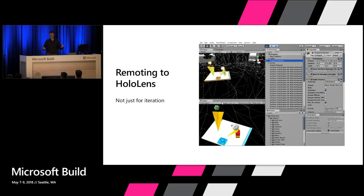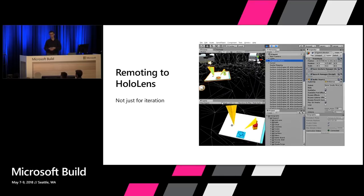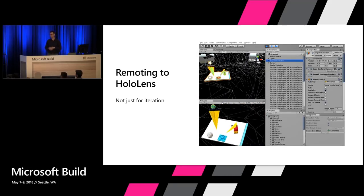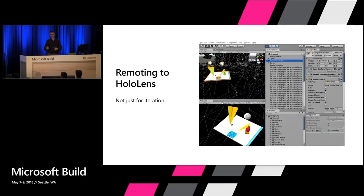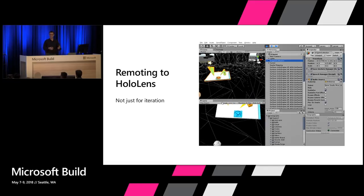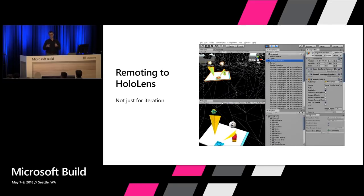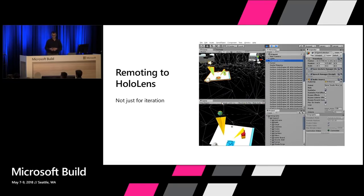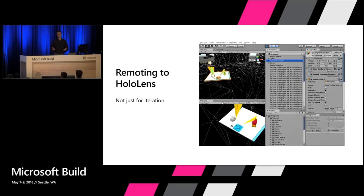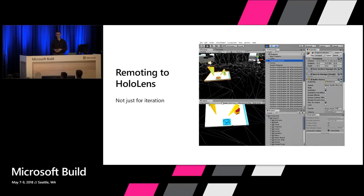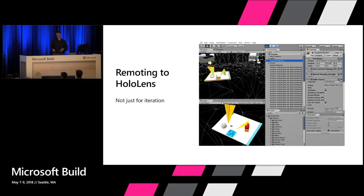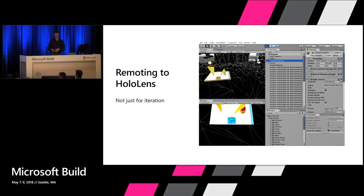We wanted to improve that, so last year we added a feature called holographic emulation with two modes. One is holographic remoting, which allows us to connect to a remoting player on the HoloLens and still run the device in the editor. This is awesome for iteration time — you can test your app, iterate, make changes to the application and your scripts, without this long development cycle. So incredibly powerful for developers.